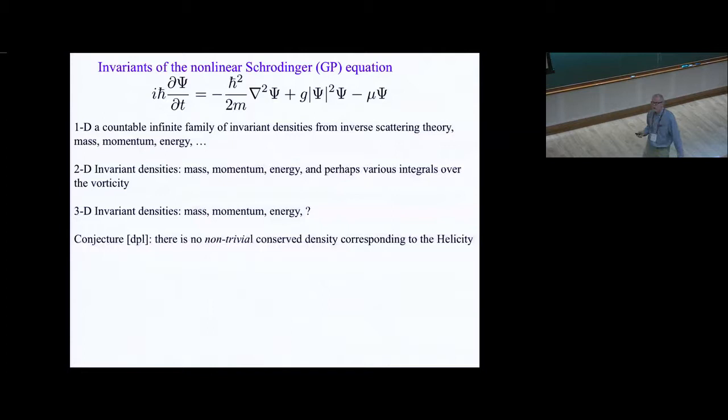There's mass, momentum, energy, and various higher-order products. For 2D, there are invariant densities of mass, momentum, energy, and perhaps various integrals over the vortices. When we go to 3D, we don't have as many invariants. The total mass is conserved, momentum is conserved. It's Hamiltonian, so the energy is definitely conserved. I am unaware in the literature of there being any other conserved quantities that have been derived for 3D Gross-Pitaevskii.